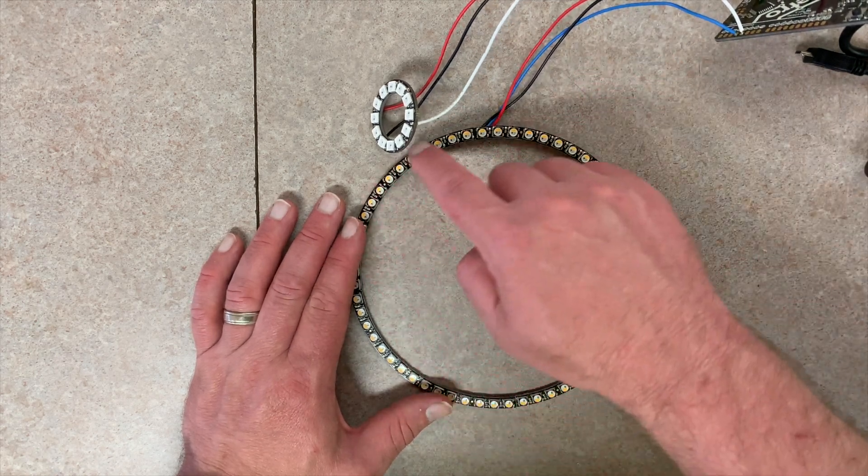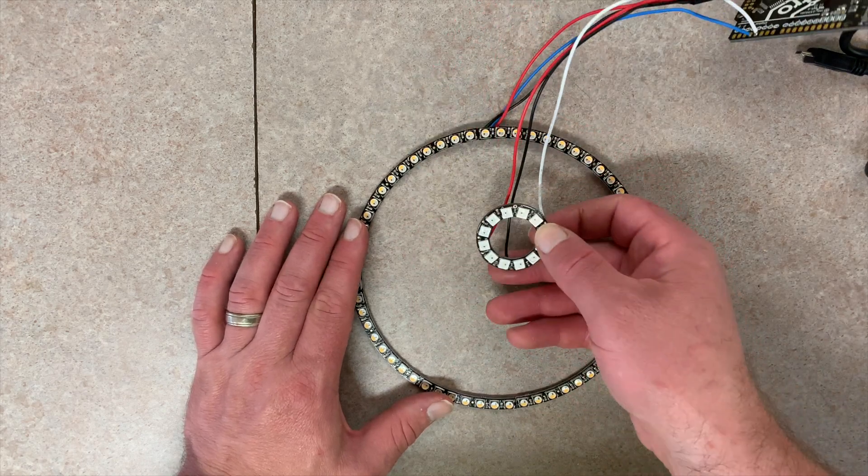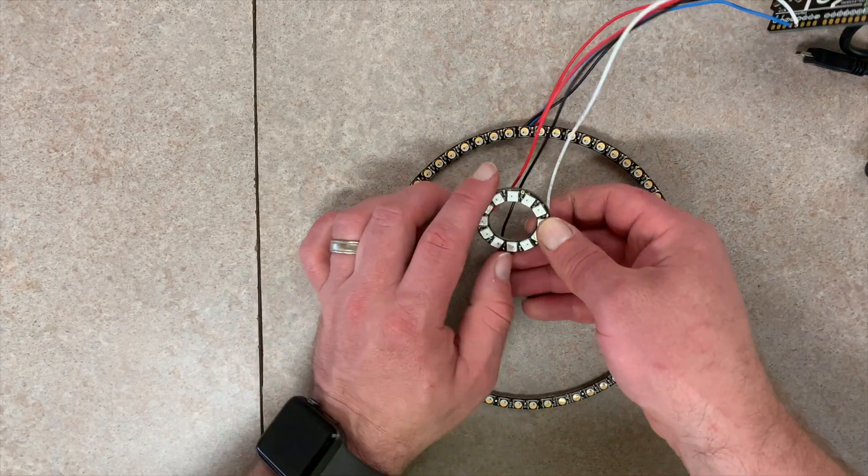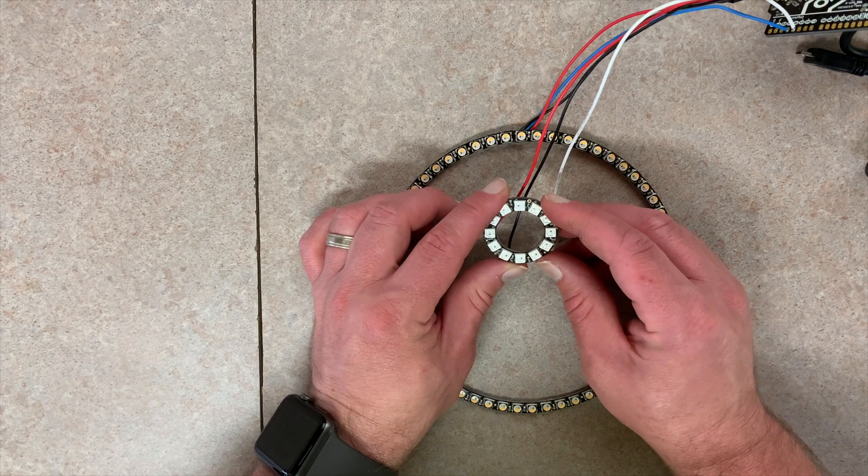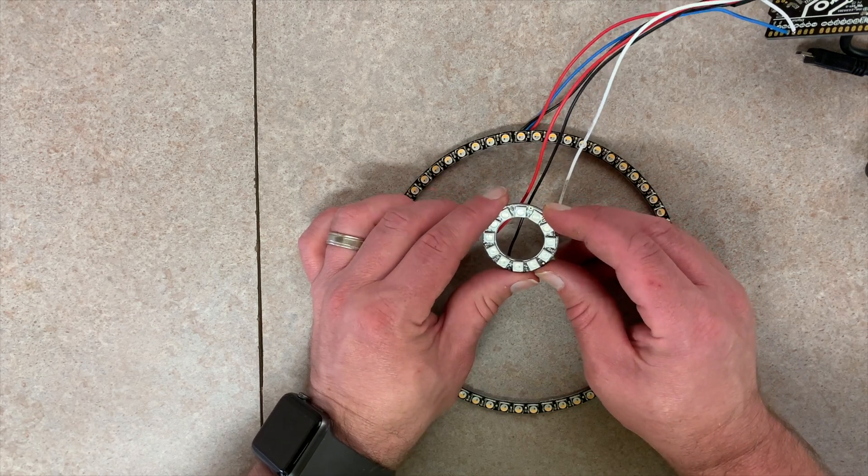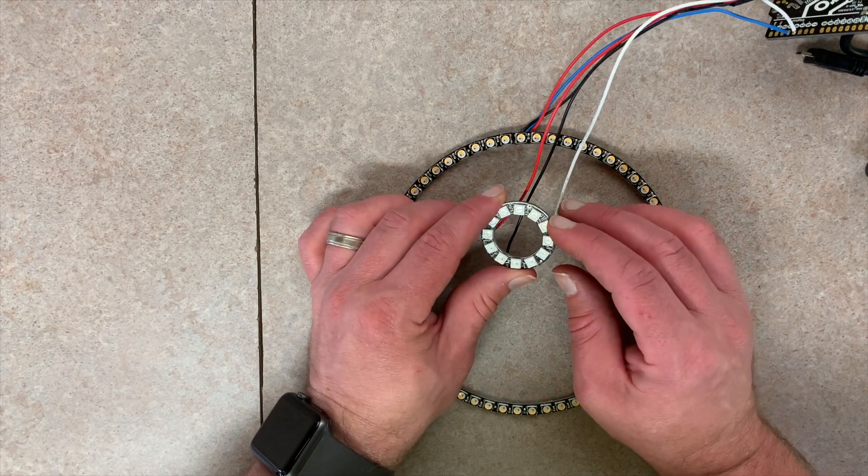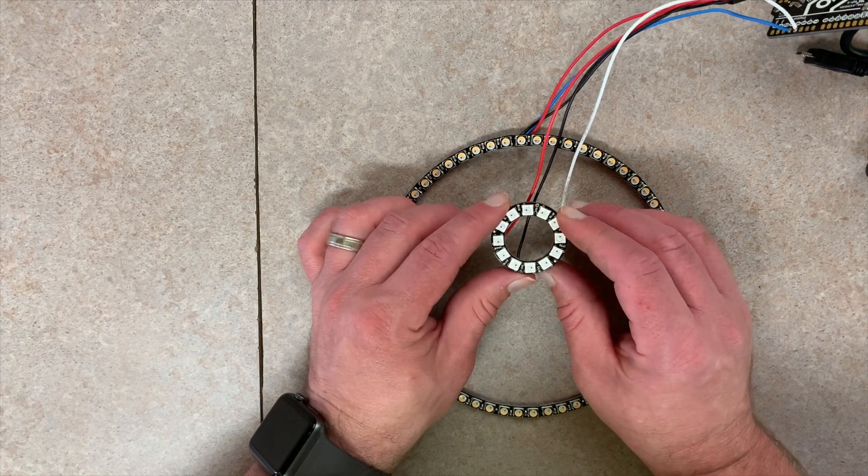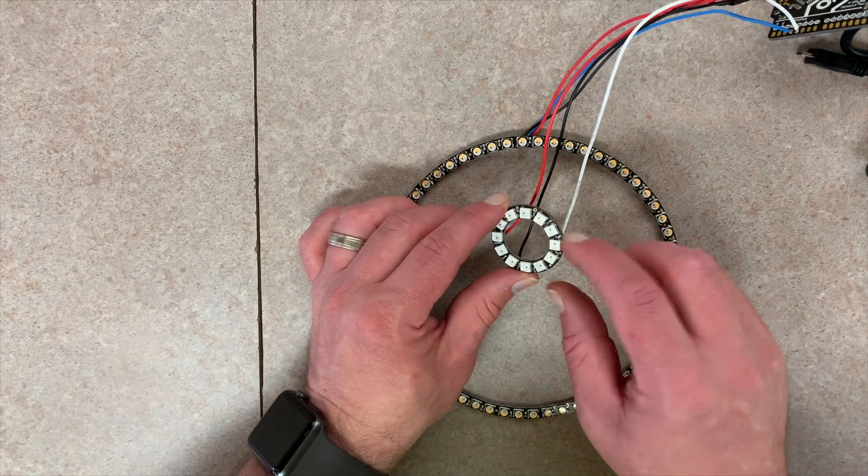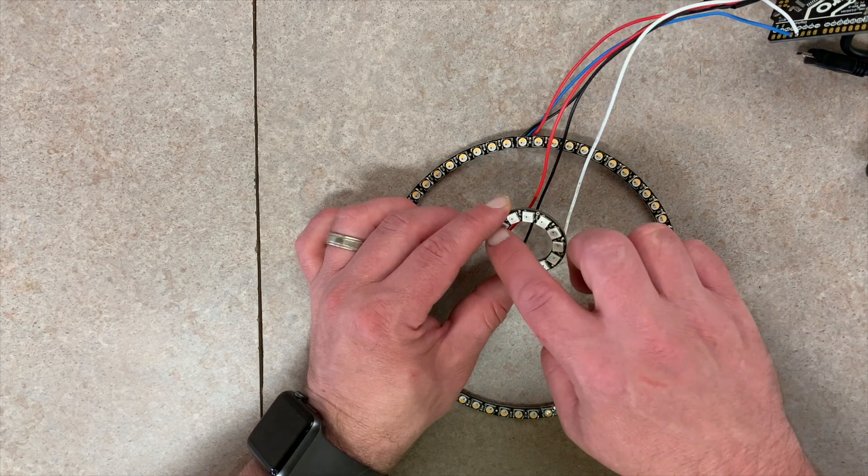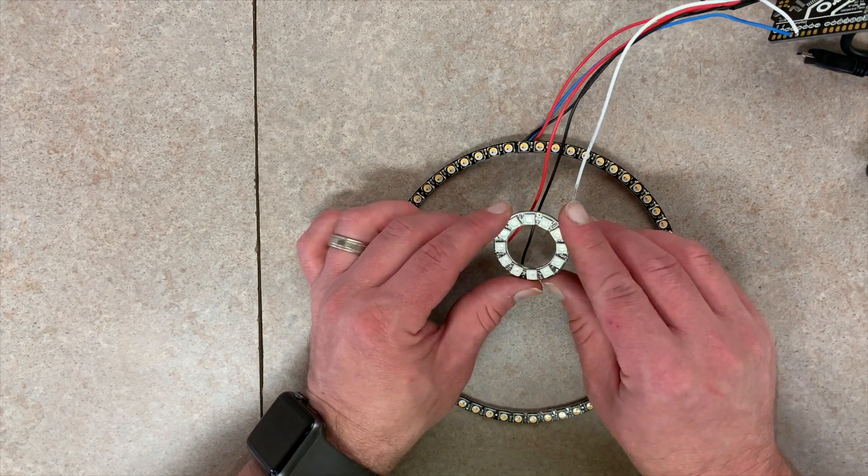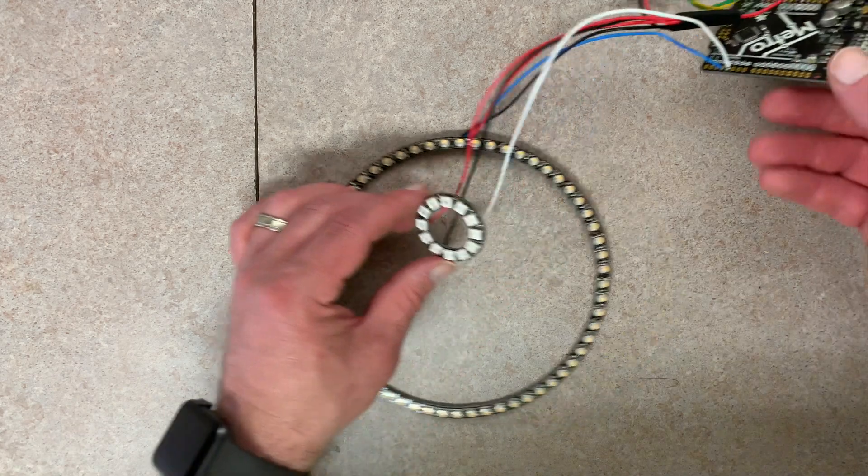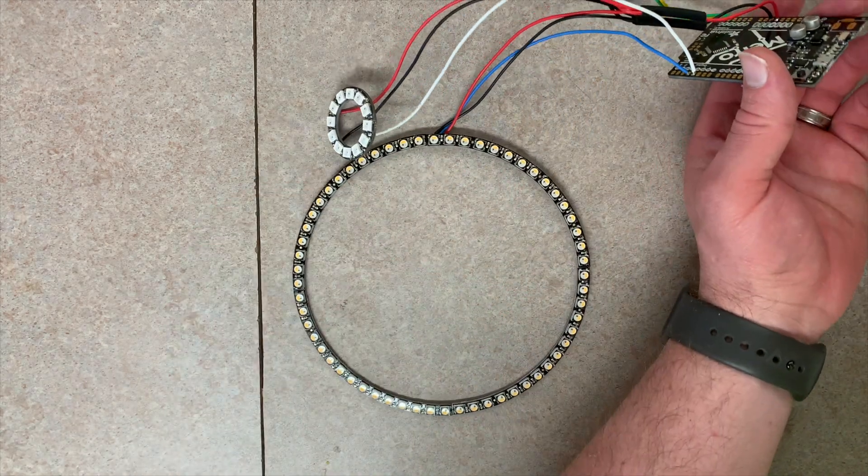There's code that someone else has already written that will make this 12 o'clock and so forth all the way around. This second one is going to be an indicator of how far away my anniversary is and how far away my daughter's birthday is. It'll alternate between two different colors and it'll fill in based on how much percentage of time is left till that date.